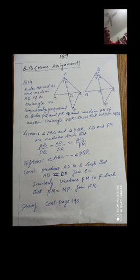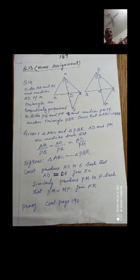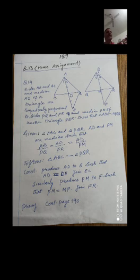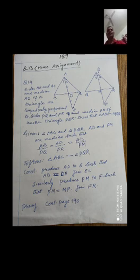There is a median again: AD/PM = AD/PM is the given condition. We have to prove that triangle ABC is similar to triangle PQR. We will prove this by construction — we produce AD to E such that AD = DE.